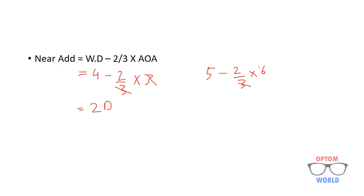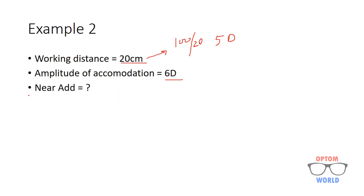By solving this, I will get 5 minus 4, that is 1 diopter. In this case the estimated near-addition is 1 diopter. So, here we go. Thank you.